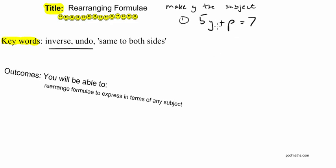I've got a left-hand side of this formula and a right-hand side, separated by an equal sign. Because it's an equal sign, whatever the value of the expression on the left is equal to the value on the right, which is 7. To keep that equal sign true — to keep it balanced — whatever I do to one side, I've got to do to the other. That's where 'same to both sides' comes in.